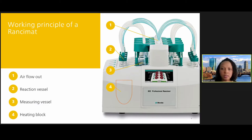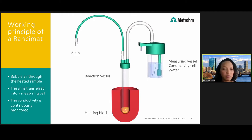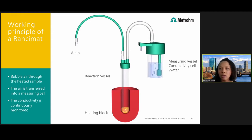The operation of the Ransomat is fairly simple. The sample is weighed into the reaction vessel, and the measuring cell is filled with distilled water. We connect the lids and tubes, and then the determination can be started. During the analysis, the sample is kept at a constant temperature in a closed reaction vessel, and a continuous flow of air is passed through the sample. Peroxides are formed as primary oxidation products via oxidation of fatty acids. After some time, the fatty acids are completely destroyed, and low molecular weight organic acids such as formic or acetic acid are formed as secondary oxidation products, along with other volatile organic species. These secondary oxidation products are conducted by air flow into a measuring vessel containing distilled water as an absorption solution.